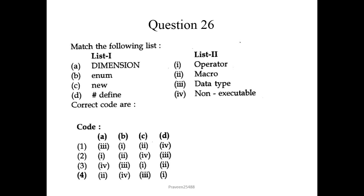Question number 26. Match the following list. In list 1, dimension will be matched with non-executable. Enum is numerator and will be matched with datatype. New will be matched with operator and here hashdefine will be matched with macro. This hashdefine directive allows the definition of macros. It will be matched with second one. So no need to check for others also. Third one would be the correct option for this.